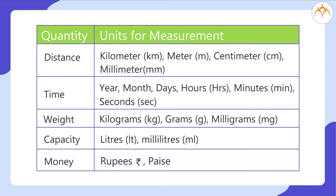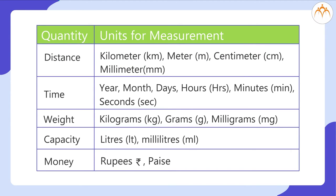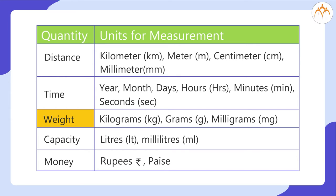The abbreviations are also written here. Quantity: distance — units: kilometer, meter, centimeter, millimeter. Quantity: time — units: year, month, days, hours, minutes, seconds. Quantity: weight — units: kilograms, grams, milligrams.